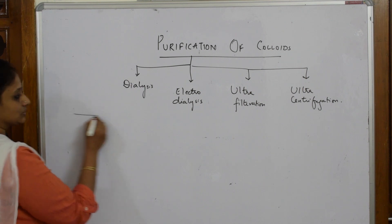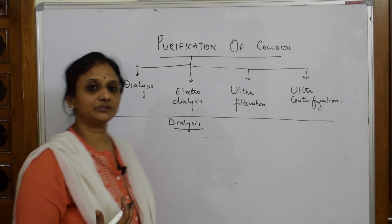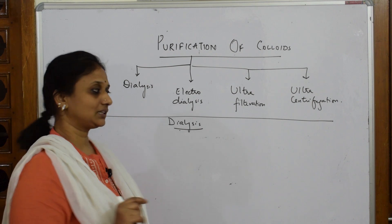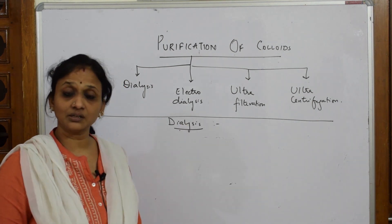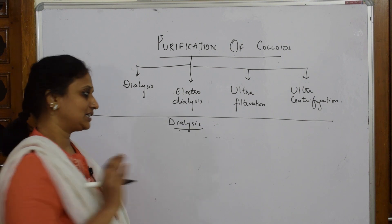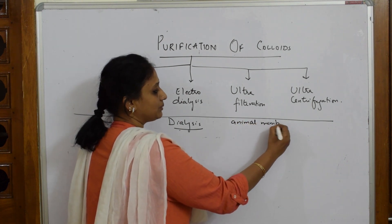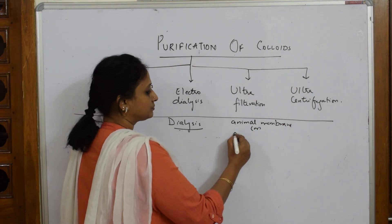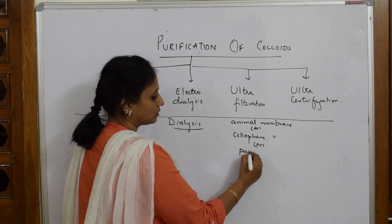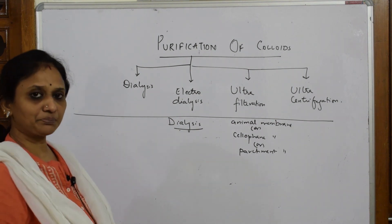Now when I have to speak about dialysis, let us focus on three important things. First, for the dialysis process to occur, I require a dialyzing membrane — an animal membrane, a cellophane membrane, or a parchment membrane.